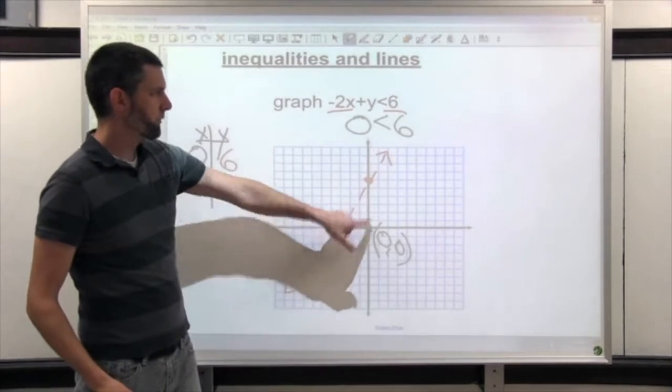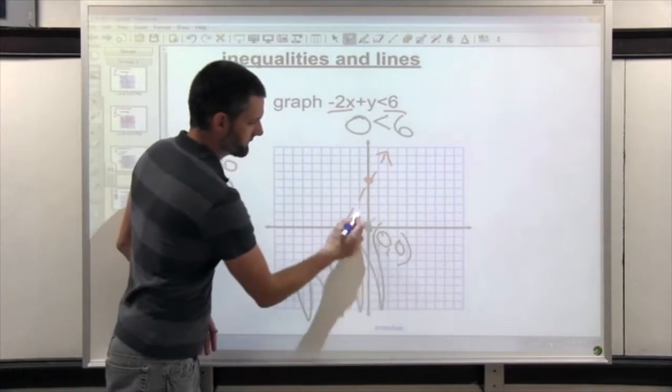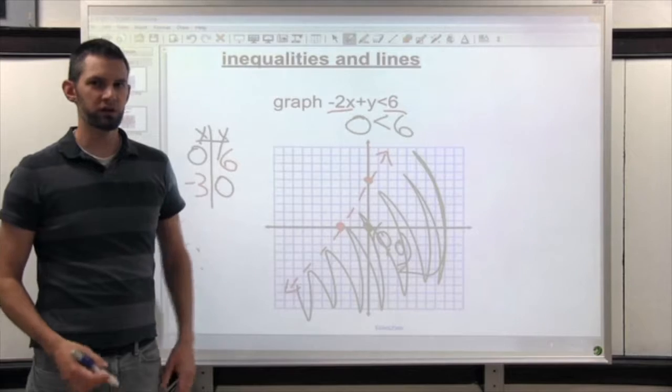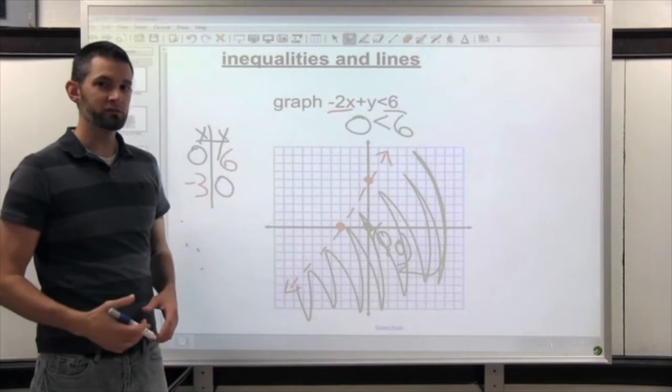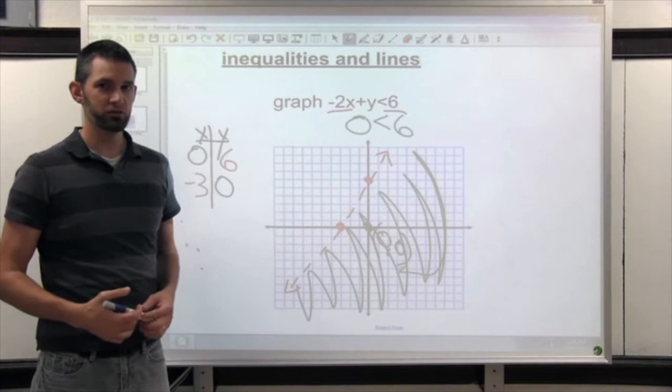So because that point makes it true, this side is the side that works. That's the side we're going to shade. If it didn't work, then we would have shaded the other side. Remember, when it's standard form, you have to try a point to know which side to shade.